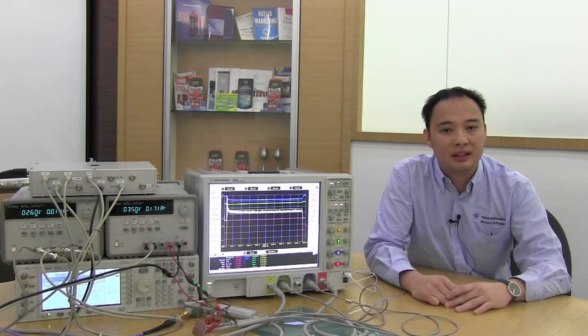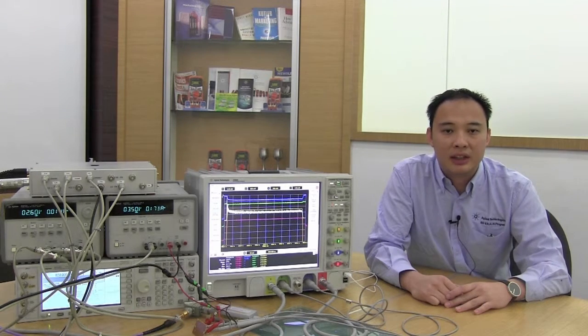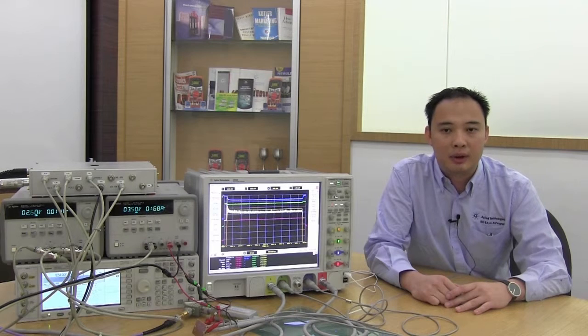Hi, my name is Ka Ming Chiu. I'm an engineer in Agilent Technologies and today I'm going to show you how to make a simple power added efficiency test using the Agilent 8990B Peak Power Analyzer.